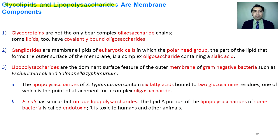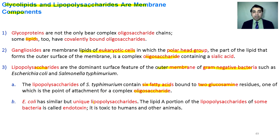Glycolipids and lipopolysaccharides are membrane components. Oligosaccharides are not only joined to proteins but also covalently to lipids. Gangliosides are the lipids of eukaryotic cells and have a polar head group attached with oligosaccharides. Lipopolysaccharides are found in the outer membranes of gram-negative bacteria and consist of six fatty acids and two glucosamine molecules. One of the glucosamine molecules is attached with oligosaccharides. Lipopolysaccharides of some bacteria are called endotoxins.